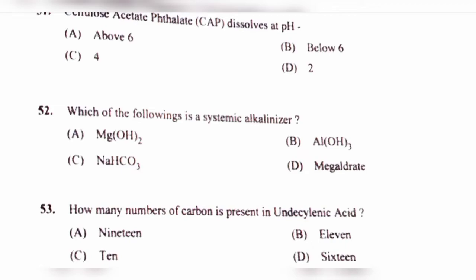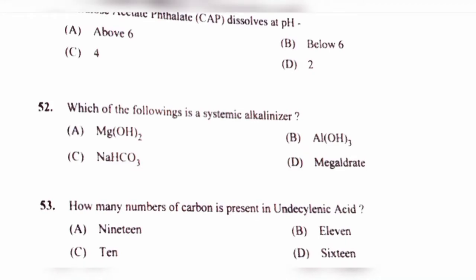Question number 52. Which of the following is a systemic alkalinizer — that means, which is the systemic antacid? Because antacid is an alkali that neutralizes the acid. Option A, Mg(OH)2; option B, Al(OH)3; option C, NaHCO3; option D, Magaldrate. The correct answer is option C, NaHCO3 — sodium bicarbonate — which is a systemic antacid.